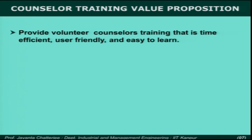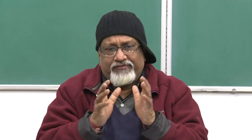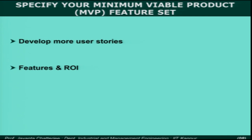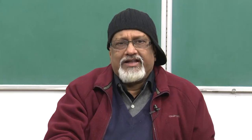Your offering is not only the value proposition — there will be many other things in it. But you are trying to find within your offering issues not covered well by current marketplace offerings and what the customer needs. The core value proposition on which your service is designed is: provide volunteer counsellors training that is time-efficient, user-friendly, and easy to learn. Given that, you specify your minimum viable product. The feature set will include more user stories, case histories, case studies, and features. The overall package cost must be affordable for these voluntary services, which may not be cash-rich.